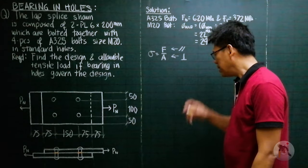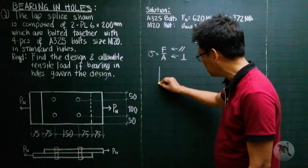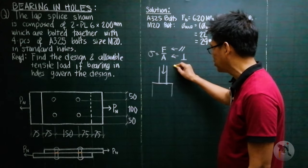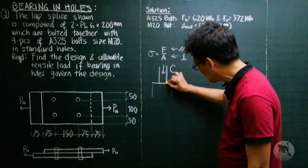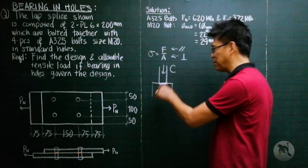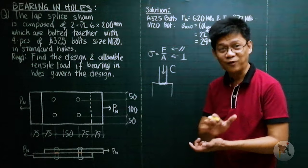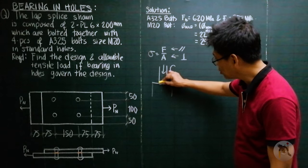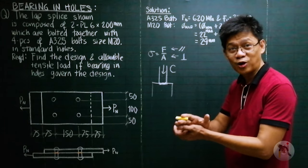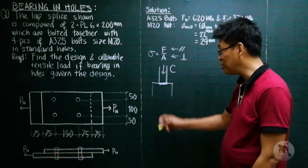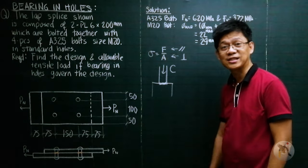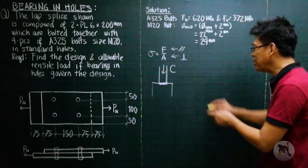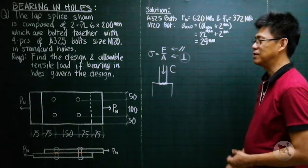If you have this material and another material under compression, the contact between them is where bearing stress happens — only at the surface. The failure in bearing could result in the surface being damaged or deformed, losing its integrity and thus losing its capacity to resist bearing.